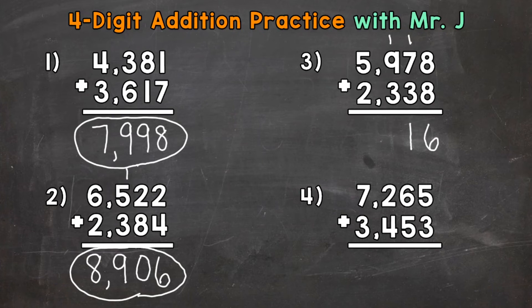Now in the hundreds, we have 1 plus 9 plus 3. So 1 plus 9 is 10. Plus 3 is 13. So put the 3 from 13 in the hundreds and regroup the 1. Now for the thousands. So we have 1 plus 5 plus 2. 1 plus 5 is 6. Plus 2 is 8. Put our comma in. And our final answer is 8,316.